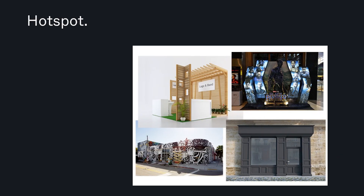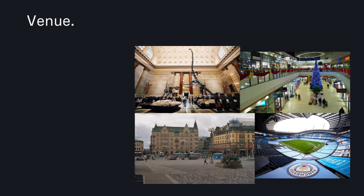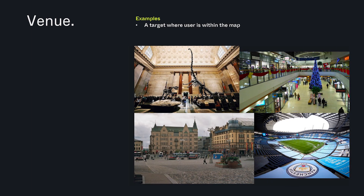There are two types of target location. A hotspot, where the user is around the map. And a venue, where the map is around the user.